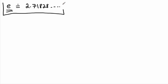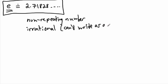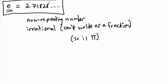Why don't we say exactly what e is? Because it's a non-repeating, irrational number — meaning you can't write it as a fraction. There aren't many irrational numbers but e is one of them. Pi is another example: although we say pi is 3.14, that's not exact. Pi goes on forever and never repeats, just like e does.